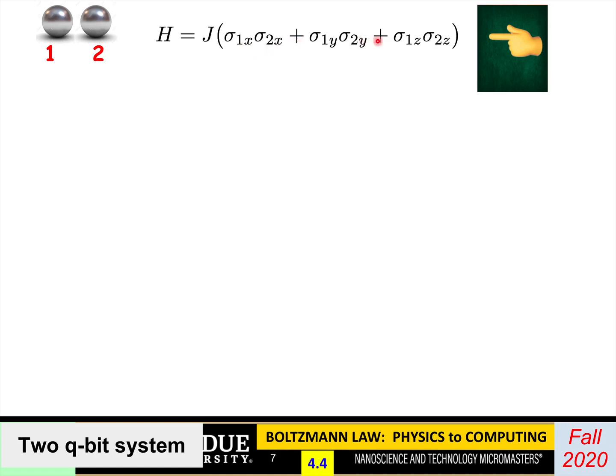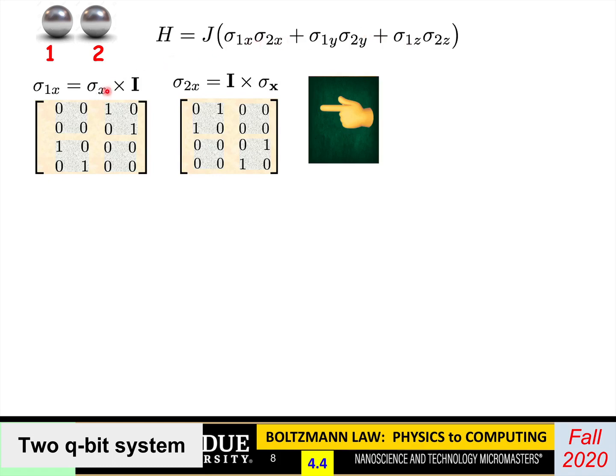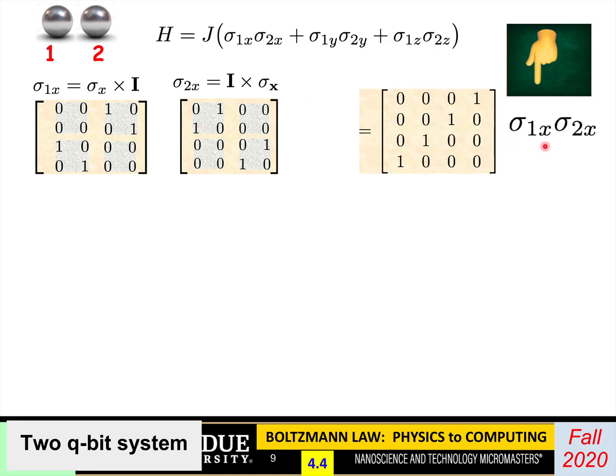The interaction term has three parts, sigma_1 dot sigma_2. So there's an xx, a yy, and a zz. Now, how do you write sigma_1x? That's sigma_x, the Pauli spin matrix, Kronecker product with the identity matrix. That gives you this expression for the 4x4 matrix representing the x spin on number 1. Similarly, if you want x spin on number 2, you take the identity matrix for 1 and take the Kronecker product with sigma_x for 2. If you take those and multiply it out, you get the operator for sigma_1x sigma_2x. And as we discussed, these operators commute, so I could have multiplied in the reverse order and still we'd get the same matrix.